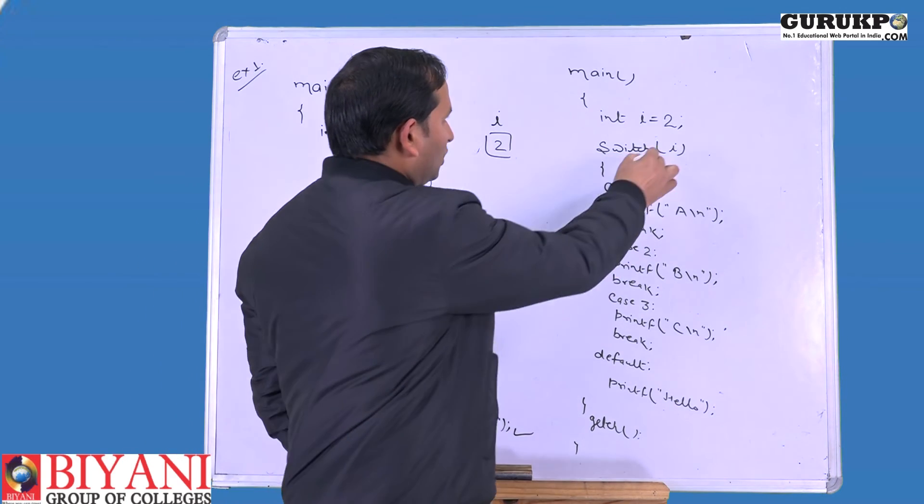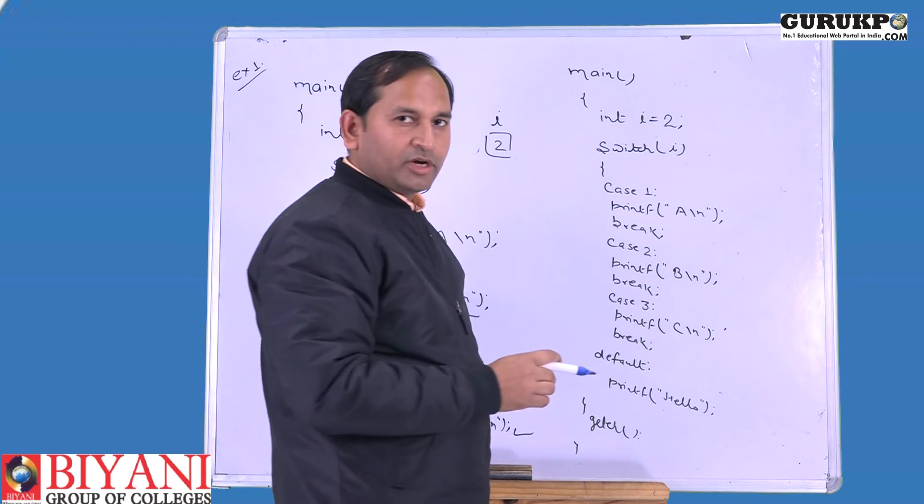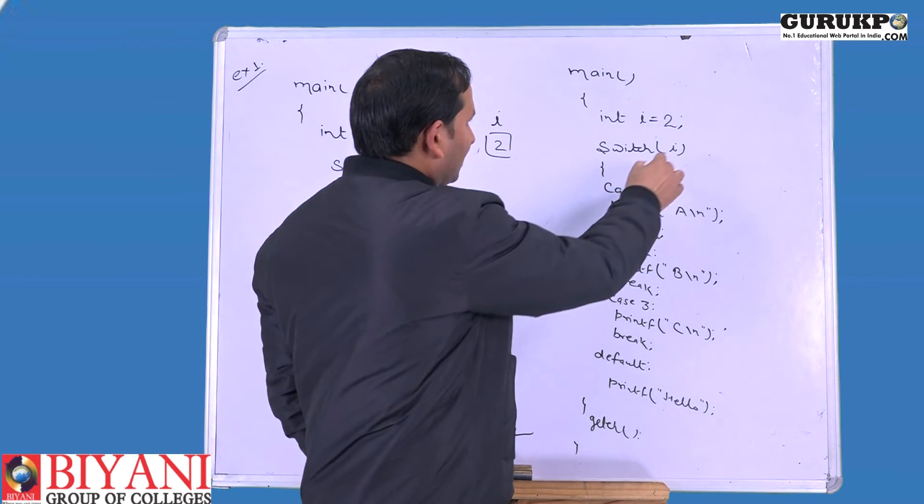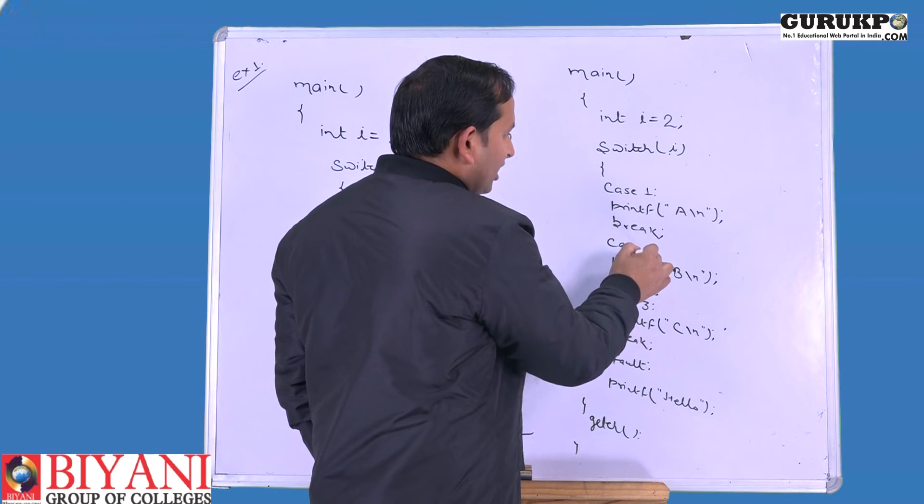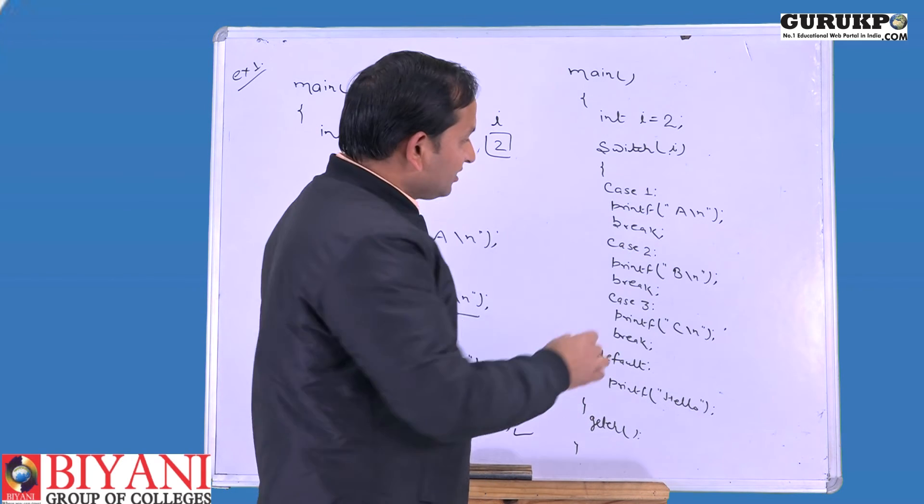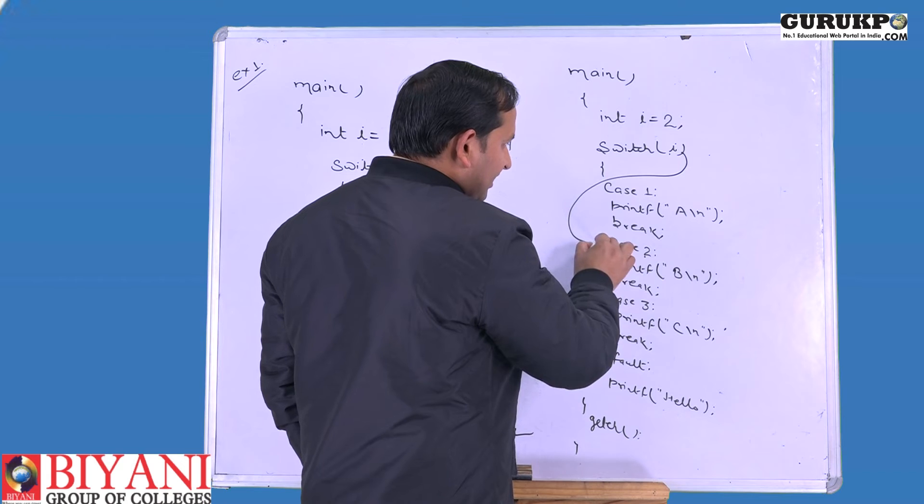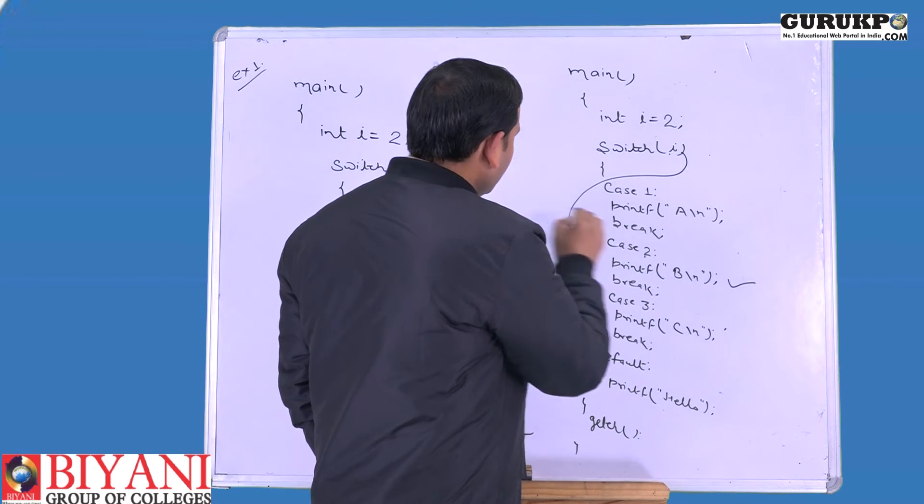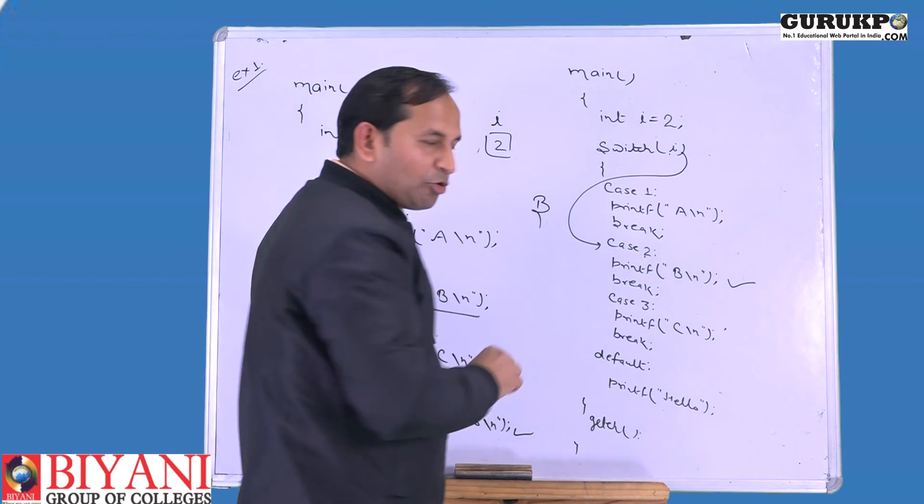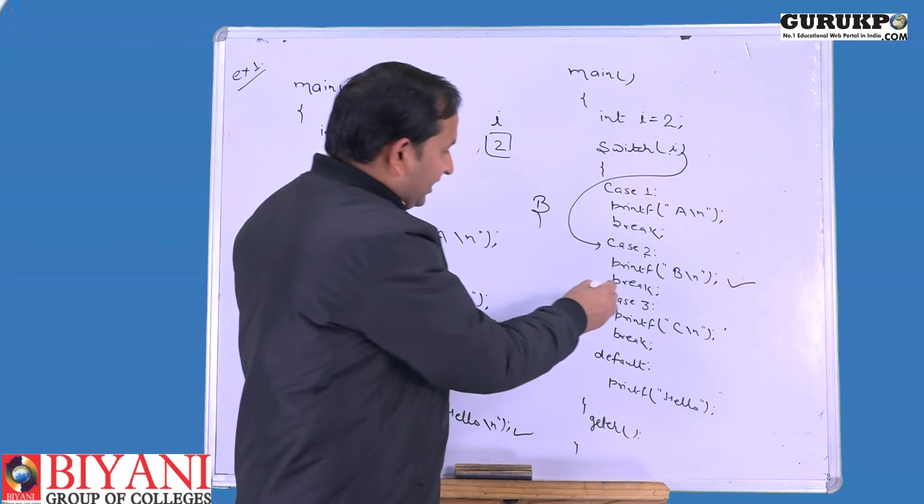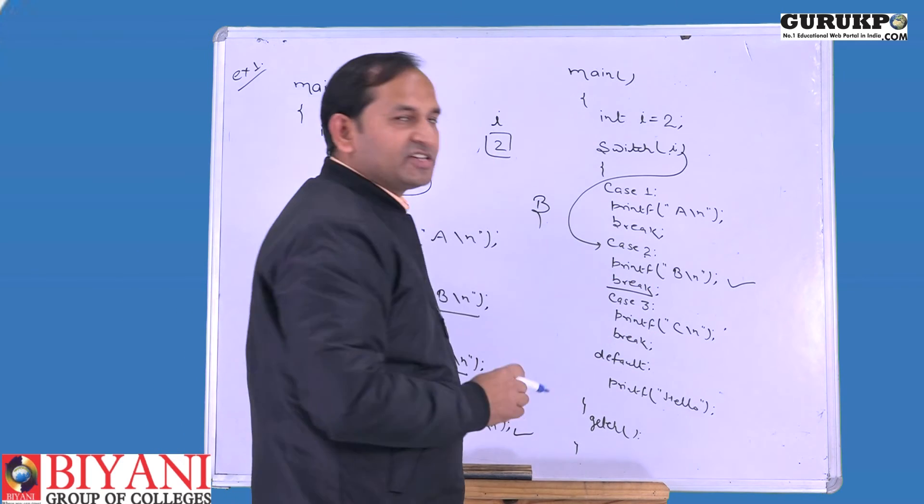So it is not equal to 1. Then control goes to 2, which equals case 2. So this case will be executed and control goes here. In this case, V will be printed on our output screen, but here we can see there is a break statement.